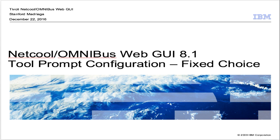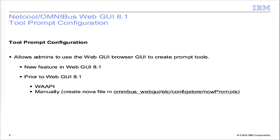Netcool Omnibus WebGUI 8.1 Tool Prompt Configuration. We're going to create a fixed-choice prompt tool. Tool prompt configuration allows admins to use the WebGUI browser GUI to create prompt tools. It is a new feature in WebGUI 8.1. Before WebGUI 8.1, there were two options: WAPI or manually creating the NOBA files for the tools.